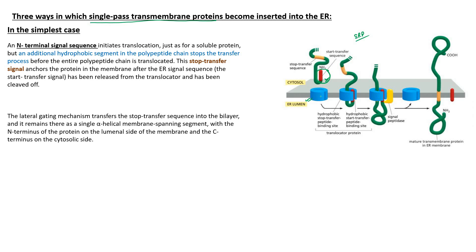As the polypeptide chain begins entering the ER lumen, once sufficient length has entered, another hydrophobic sequence appears — the stop transfer sequence. This stop transfer signal is separate from the N-terminus ER signal sequence. It is an additional hydrophobic sequence in the protein, and when it arrives at the translocator pore, it binds to the hydrophobic stop-transfer peptide binding site on the translocator.